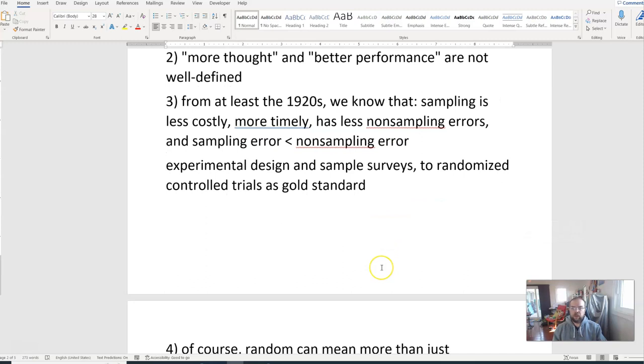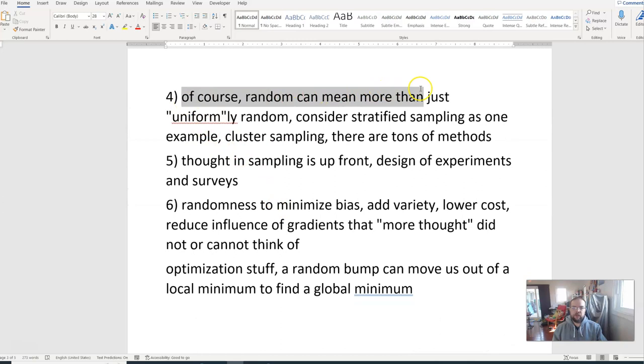Now if you just say random, that typically implies like a uniform distribution, but random itself, random can mean more than just a uniform distribution. It can mean more than just rolling dice or flipping coins or something. Stratified sampling is just one of those, cluster sampling. And there's many, many, many other different types of ways to incorporate randomness.